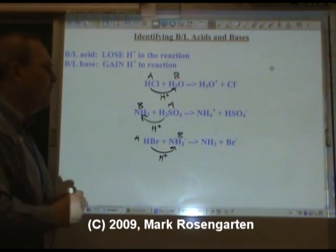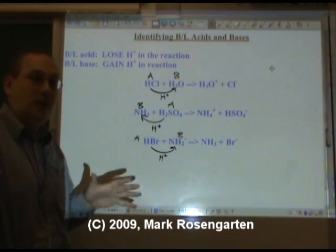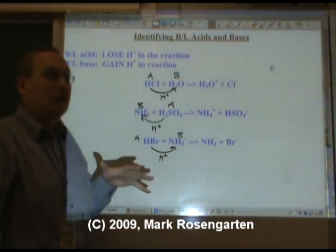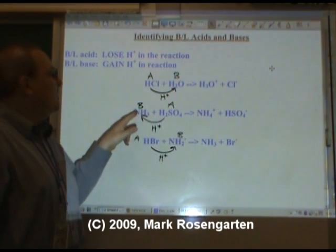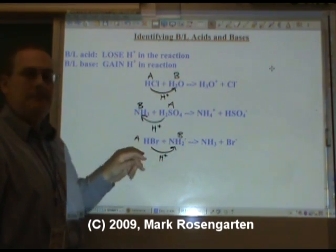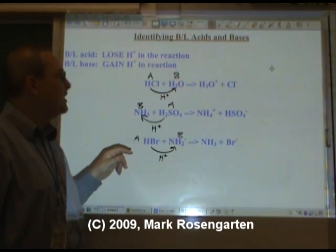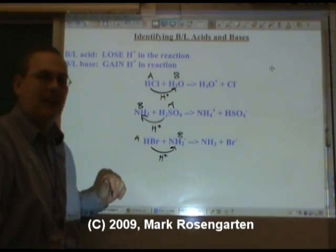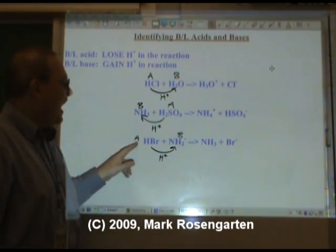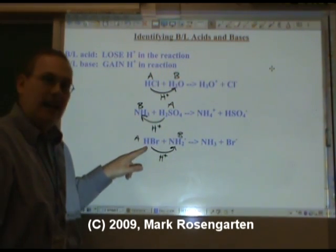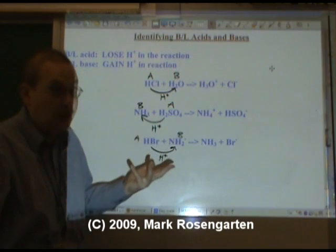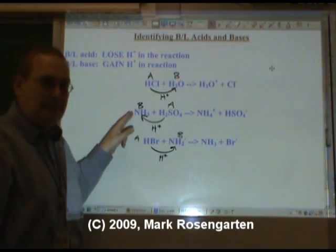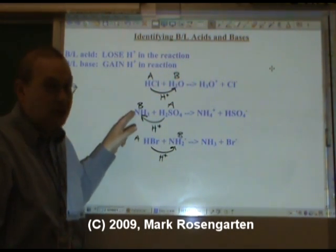You can see from this that, as opposed to Arrhenius which said bases must contain OH, a Brønsted-Lowry base is not defined by that. A Brønsted-Lowry base is defined by its actions in a chemical reaction. The acid is the species that loses the hydrogen — the proton — and the base is the species that accepts the H-plus, the proton.